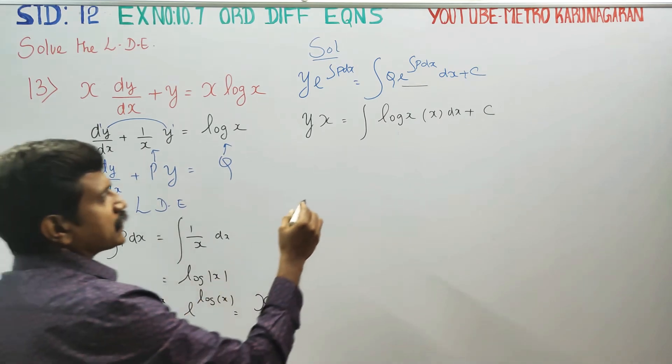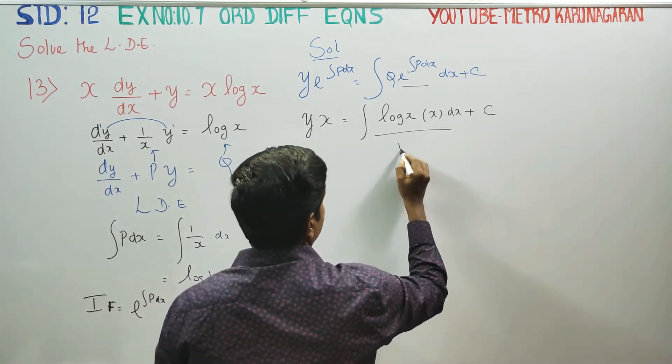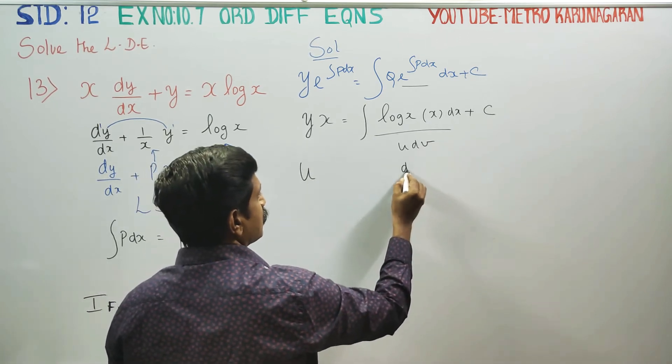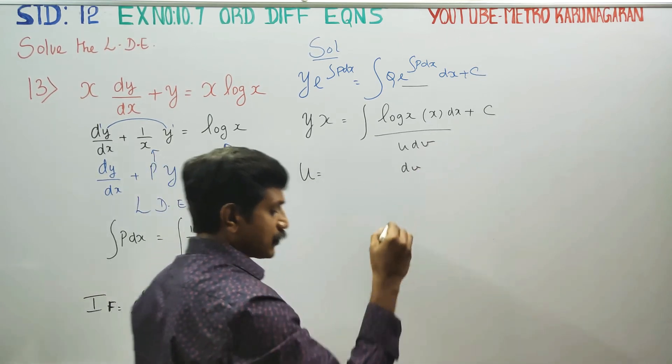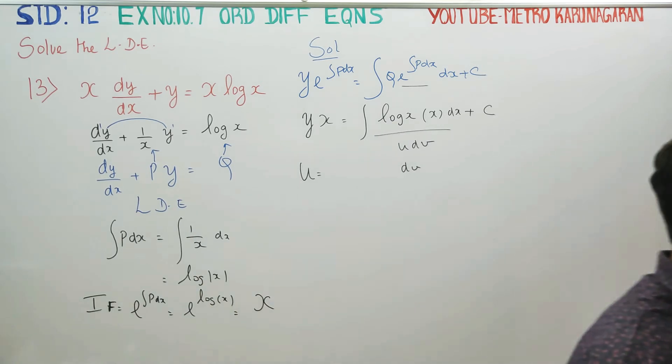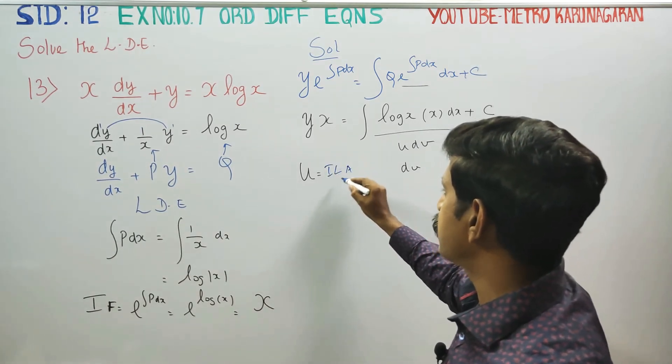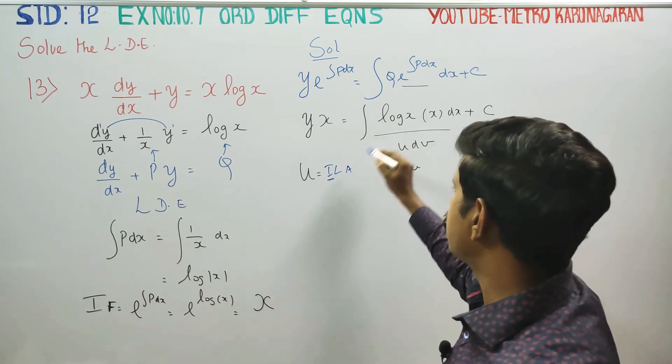For this integral, use the u-dv formula. What is my u and what is my dv? Using the ILATE rule—inverse, logarithm, algebraic, trigonometric, exponential—u is the logarithm, so u equals log x.